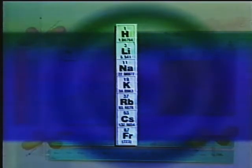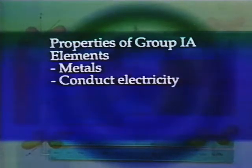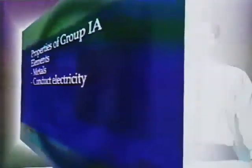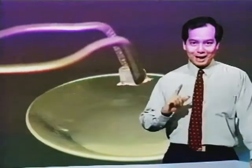Lithium, sodium, potassium, rubidium, and cesium are together in group one because of similarities in chemical and some physical properties. For example, they are all metals and they conduct electricity. We'll study the reactions of sodium and potassium and from these try to draw conclusions for the group 1A elements.